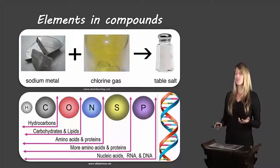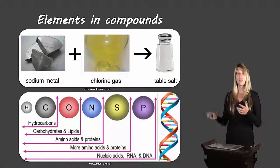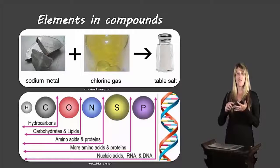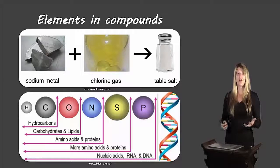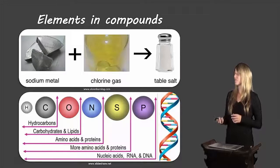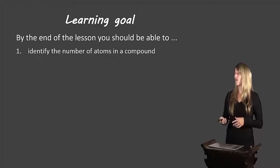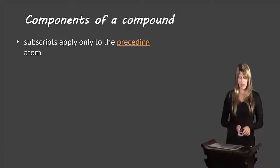Similarly, if you take hydrogen, carbon, oxygen, nitrogen, sulfur, and phosphorus, you can end up with all the building blocks of the human body — our DNA, our proteins, our lipids, and so on. All of these elements combine together, even though they have different properties, to make us. We have one learning goal for today: to identify the number of atoms in a compound.